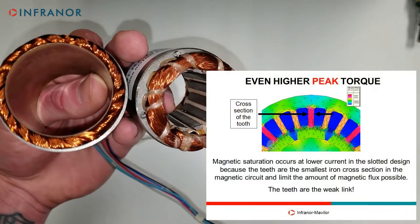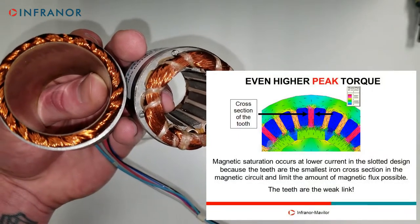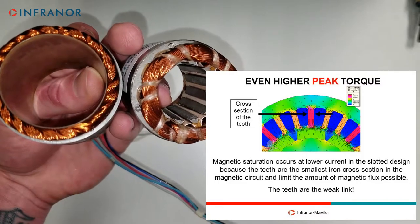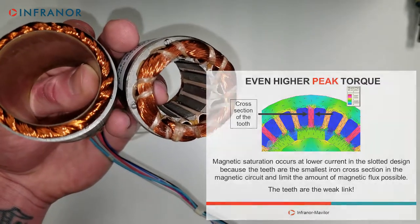Third, without the thin section of the teeth in the magnetic path, we can get higher peak magnetic saturation levels and therefore higher peak torques.